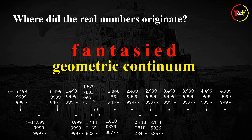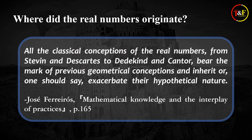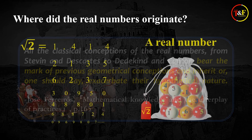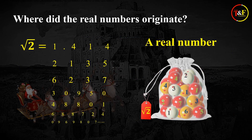It's just that one fantasy gives rise to another fantasy. The philosopher of mathematics Jose Ferreirós says: 'All the classical conceptions of the real numbers from Stevin and Descartes to Dedekind and Cantor bear the mark of previous geometrical conceptions and inherit — or one should say, exacerbate — their hypothetical nature.' The thing is that these kinds of objects that involve infinity are rather called real numbers. Considering the fact that they are a complete fantasy, it feels like they should have been called imaginary numbers or fictional numbers. But interestingly enough, they are called real numbers. So we are finally led to the following question: why are they called real numbers? Answering this question is a key to understanding why our modern mathematics is a religion. So in the next video, we are going to find it out.